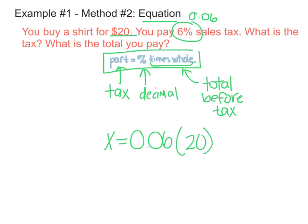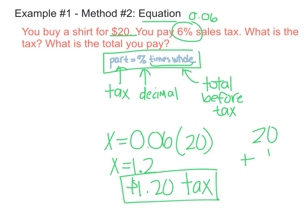So 0.06 times 20 and I get x equals 1.2, which now we know is going to be $1.20. And again, that's our tax. And then the step for finding our after-tax total or our total amount is exactly the same as before. You take the original amount plus the tax and you get our after-tax total. And I'm just going to make sure that I'm labeling here which is which. So we've got our tax and our total.